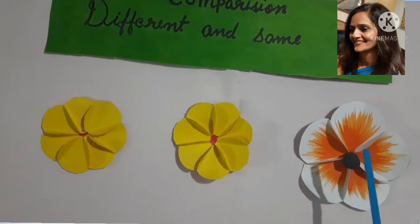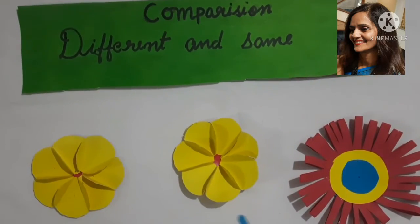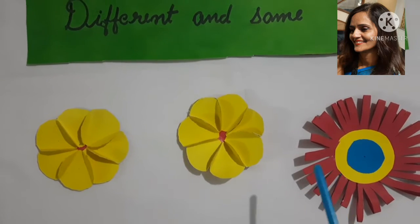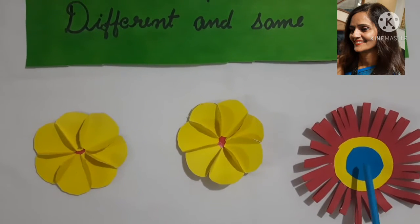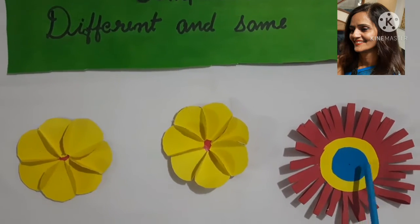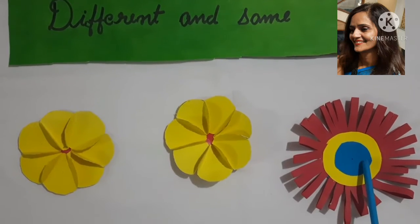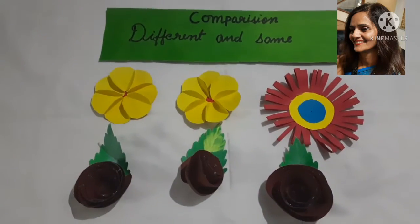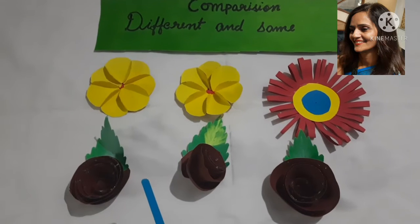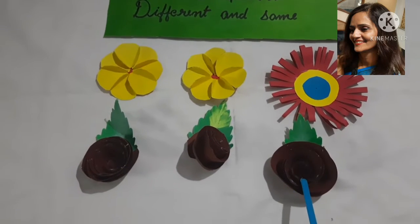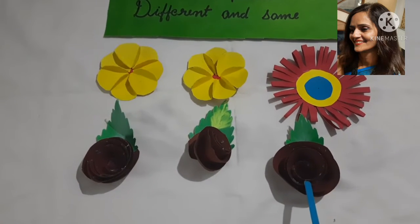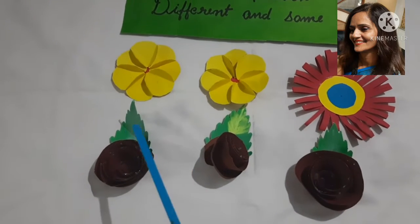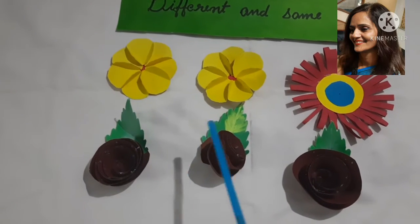Look again — these flowers. Are they the same? No, it is different in color and shape. So children, when we see objects that are the same in size, color, and shape, we can say these are same objects.